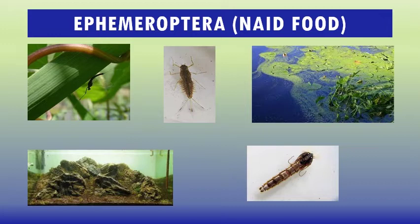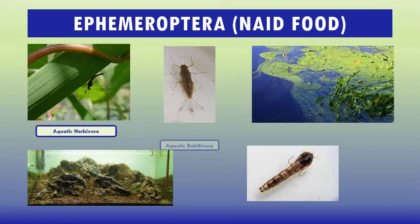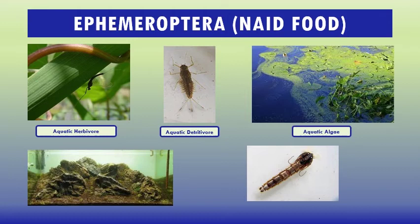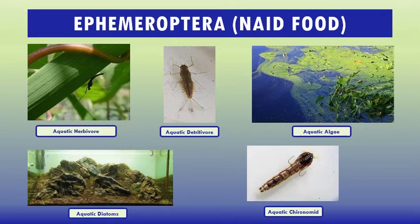Ephemeroptera nymphs need food. What do they feed on under water? They are aquatic herbivores and aquatic detritivores. They feed on aquatic algae, aquatic diatoms, and also on aquatic chironomids.